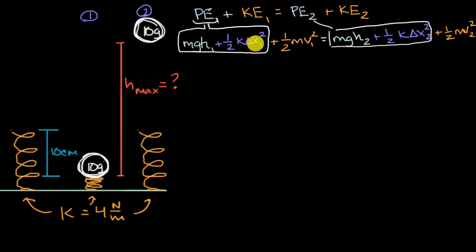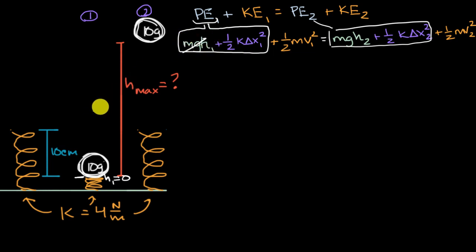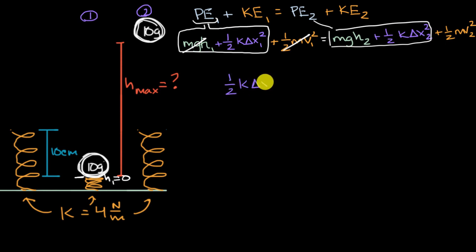This might look daunting, but there's a lot of simplification. We can define our starting height h one as zero, which eliminates the gravitational PE term. We also know velocity is zero in the starting scenario, so kinetic energy is zero too. The left-hand side is entirely elastic potential energy: one half times the spring constant times the compression in scenario one squared.